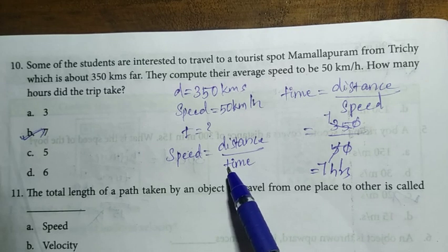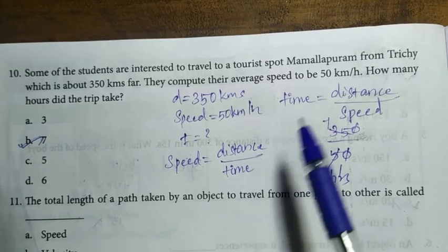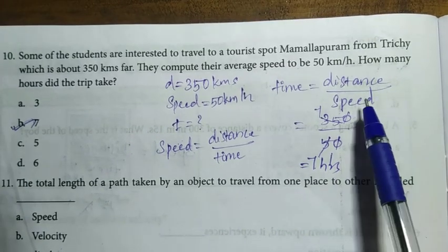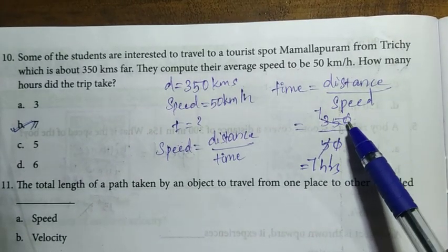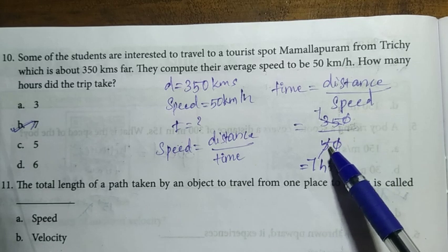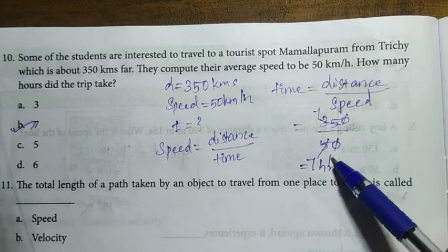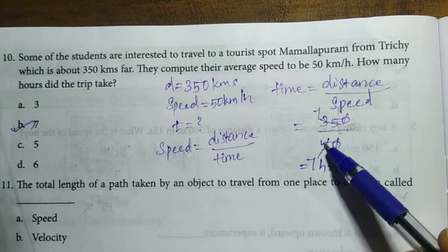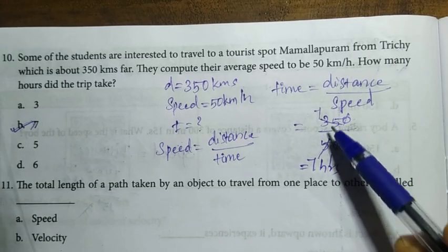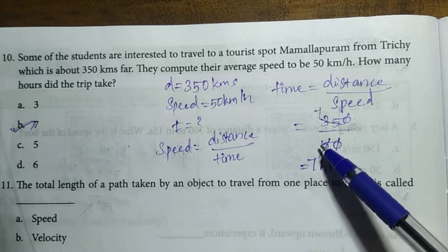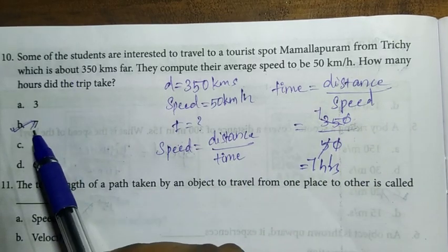Time = distance divided by speed = 350 kilometers divided by 50 kilometers per hour. Zeros cancel, and using the 5 times table: 350 divided by 50 equals 7. Answer for the 10th question is option B — 7 hours.